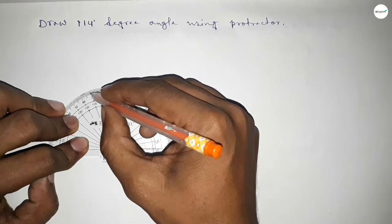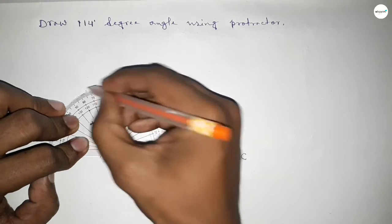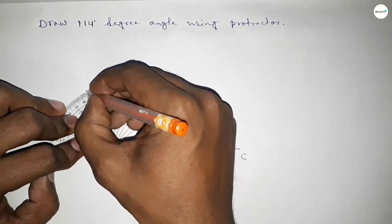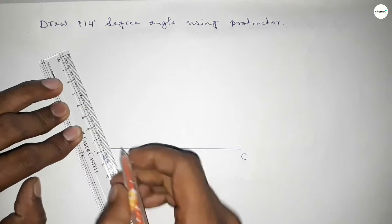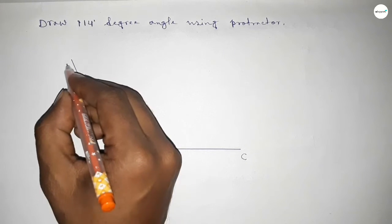100, 110, 114. So this is 114 degrees. Now joining this to get 114 degrees and taking here point A.